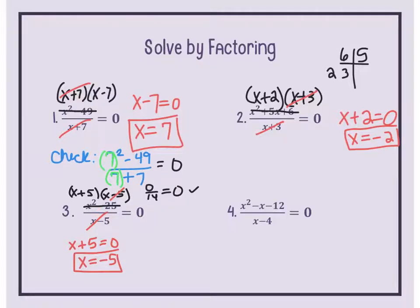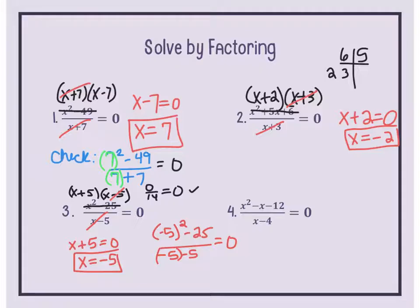For those who want to see a check: negative 5 squared minus 25 over negative 5 minus 5. We're checking if it equals 0. The numerator: negative 5 squared is 25, and 25 minus 25 is 0. So 0 over negative 10 is 0 — it checks out.